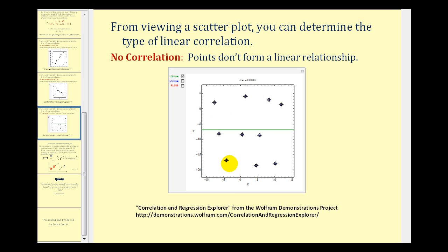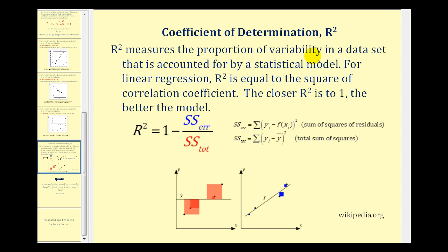The second measure of how well a model fits the data is the coefficient of determination, or r squared. R squared measures the proportion of variability in the data set that is accounted for by the statistical model. And there is a formula here to calculate r squared, but for linear regression, r squared is just going to be the square of r. And the closer r squared is to one, the better the model.